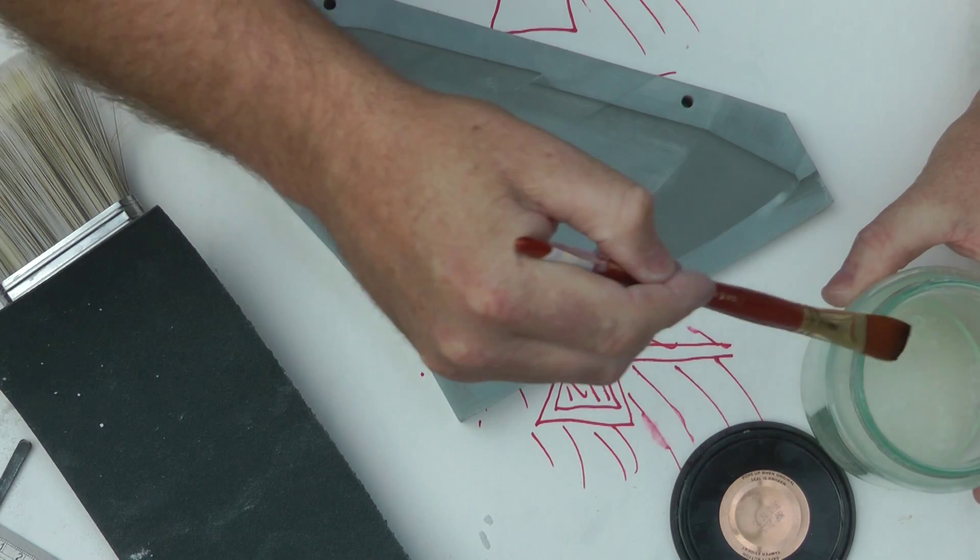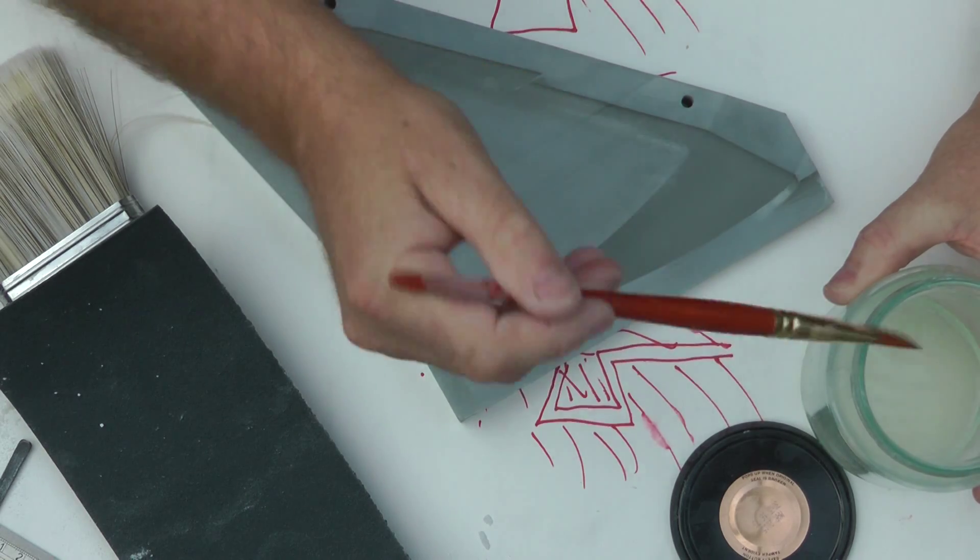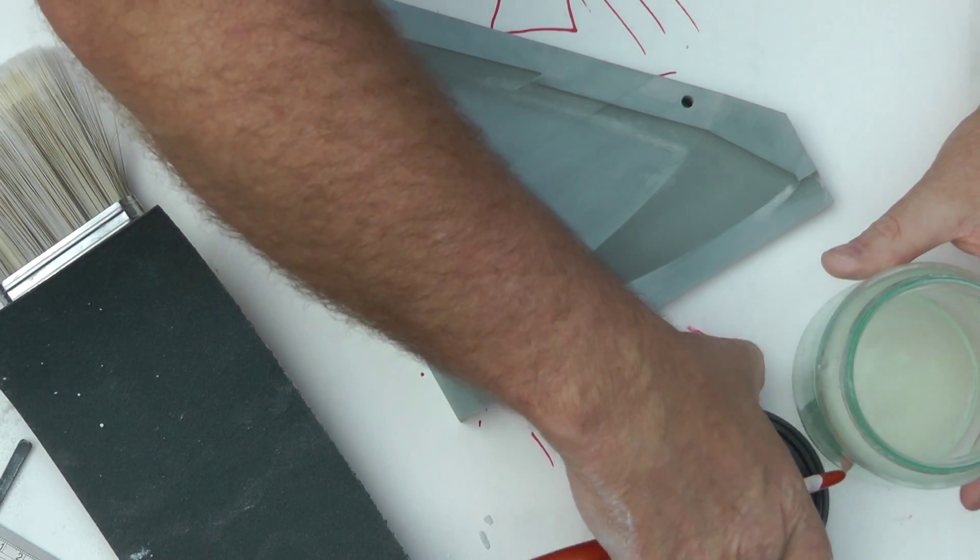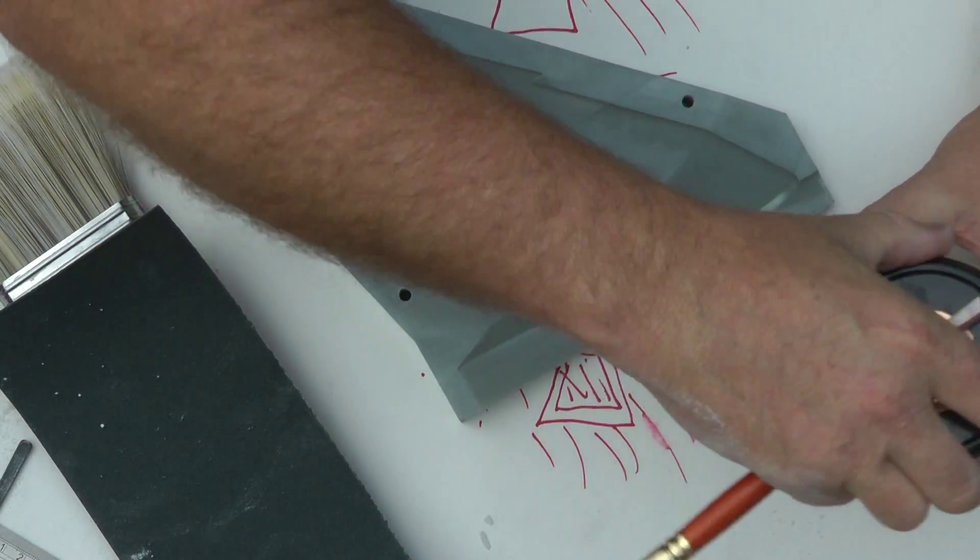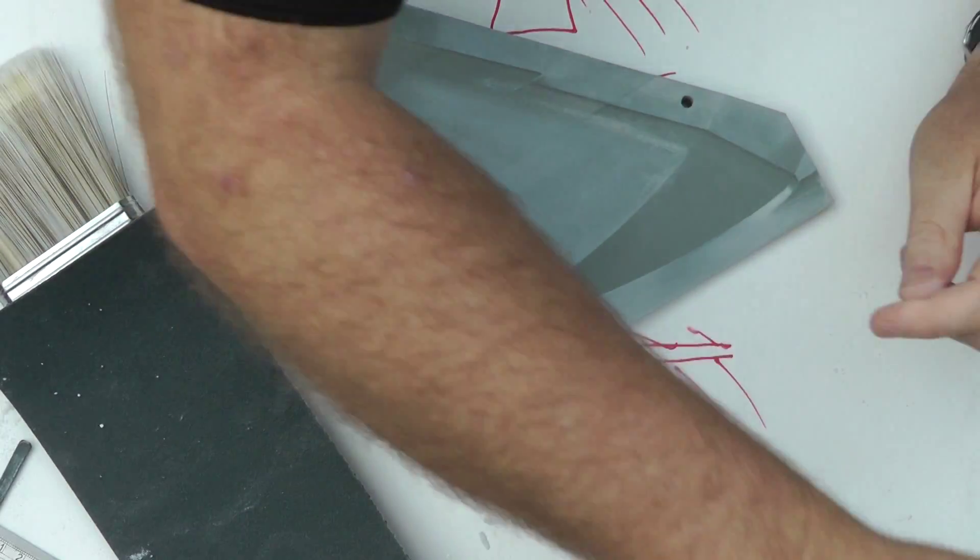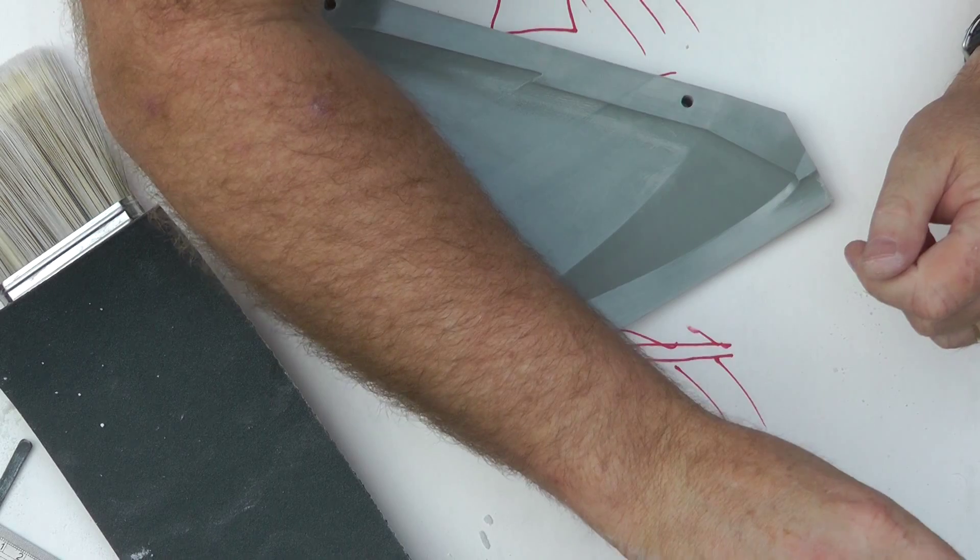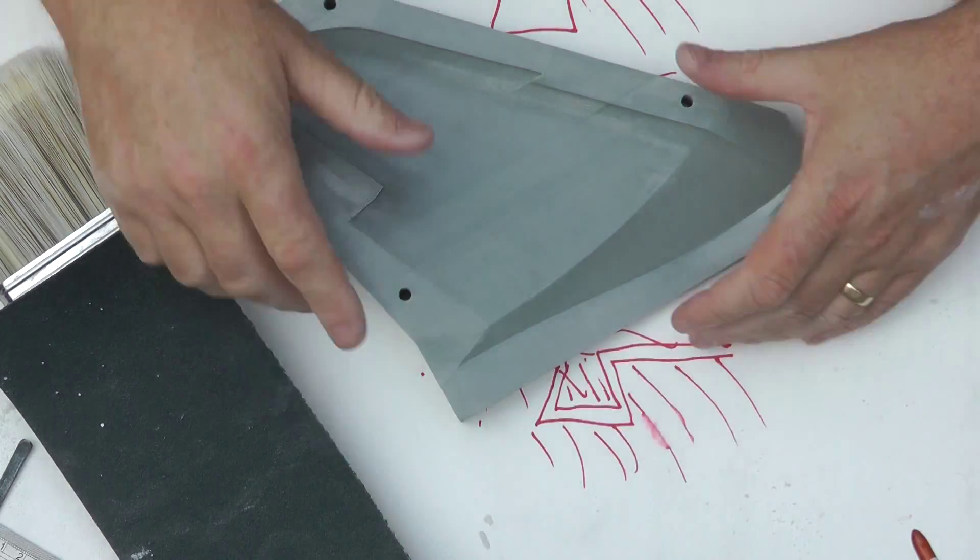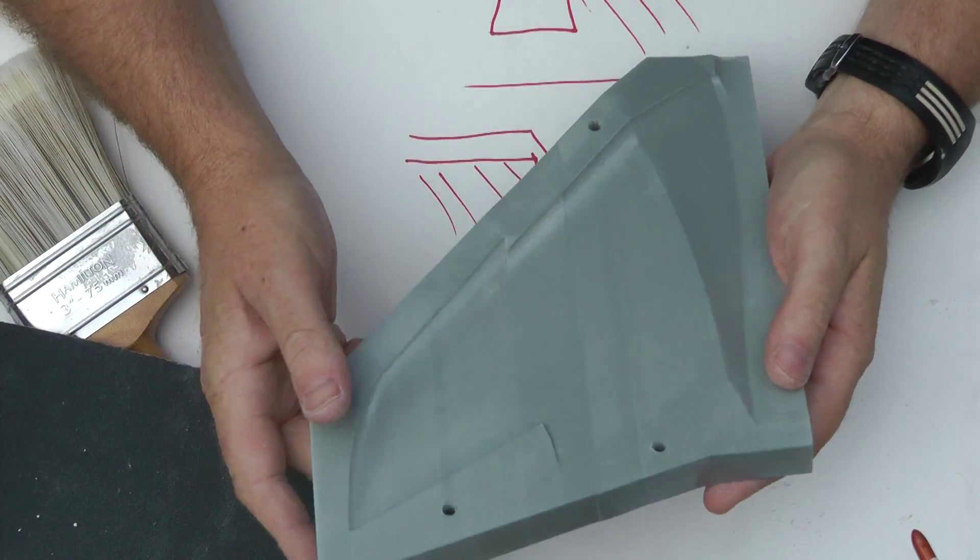And once that's done, we'll give it another coat of acetone. That'll probably be its last coat of acetone, otherwise you're just chasing your tail before we get onto the 800 grit sandpaper.